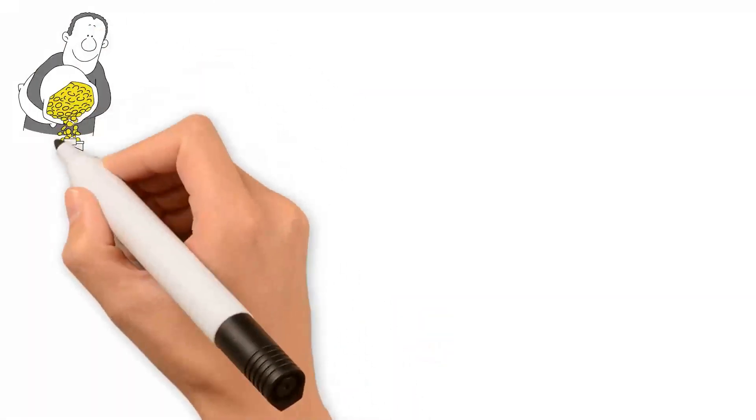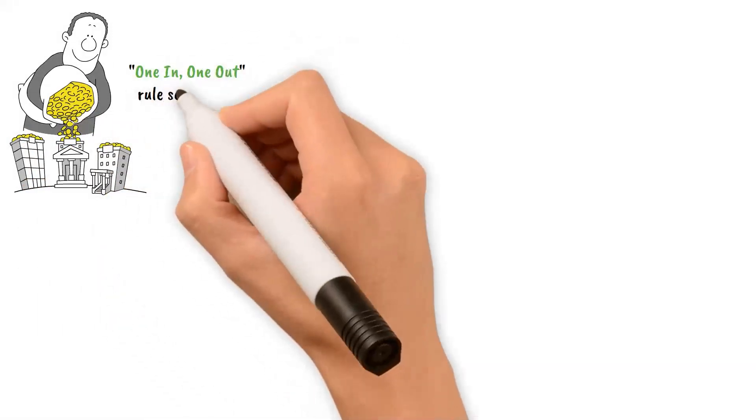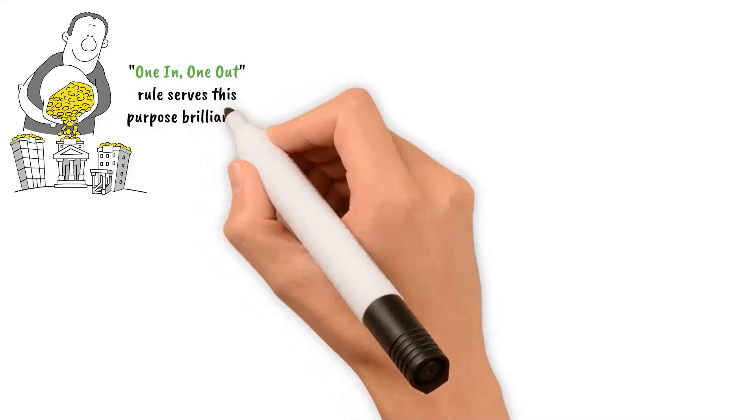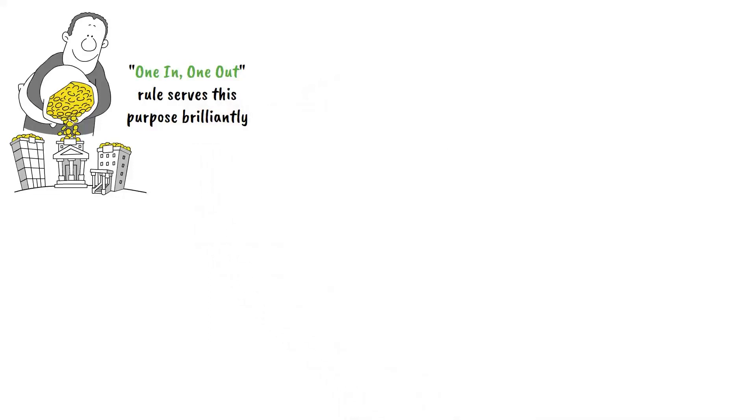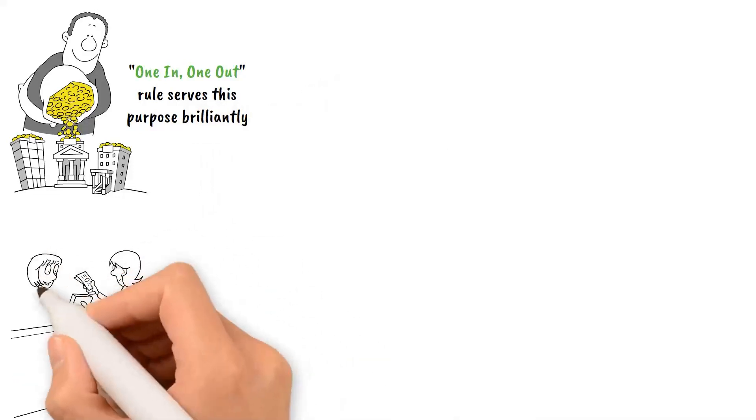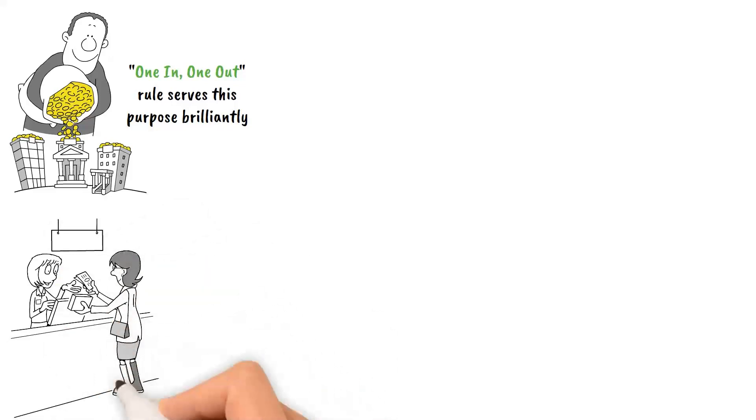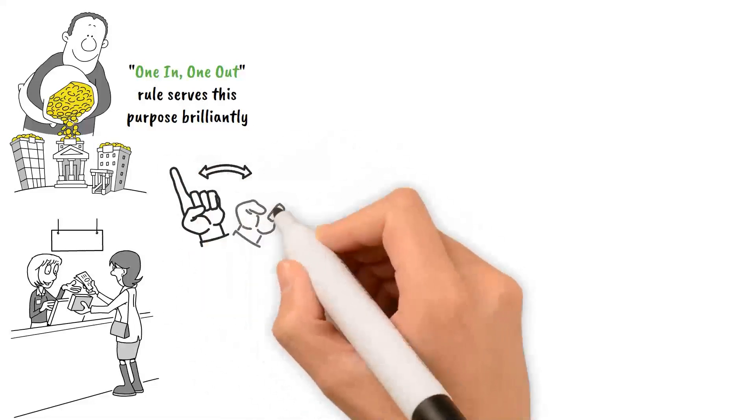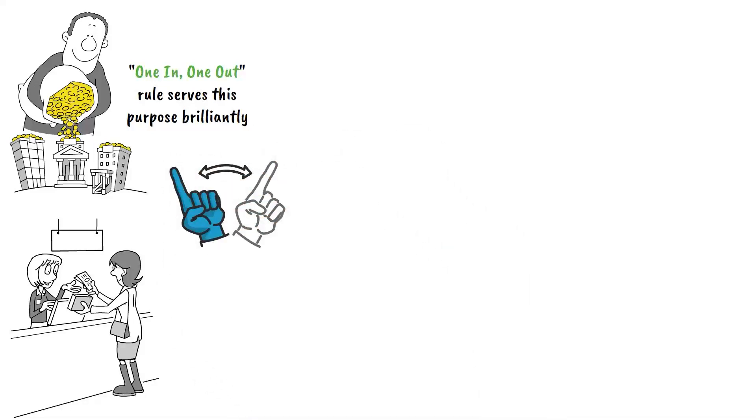One-in-one-out rule. An important part of adopting a minimalist lifestyle is managing our possessions effectively, and the one-in-one-out rule serves this purpose brilliantly. This simple yet effective principle states that for every new item we bring into our home, we should remove an existing one. This ensures that our possessions don't accumulate over time and encourages us to consider each new purchase carefully.